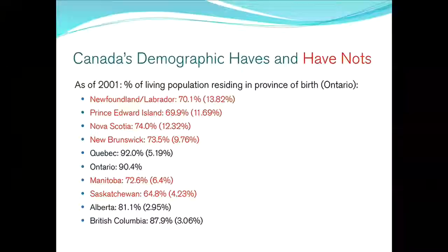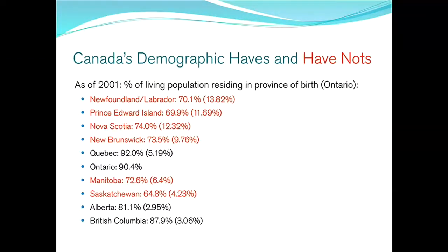I looked at 2001 census data — 2001 is the most recent year for which we can get accurate data about province of birth — and I looked at the proportion of the population that lives in the province in which they were born. For Newfoundland and Labrador, that number, 70.1%, says that only 70% of all people born in Newfoundland currently live in Newfoundland as of 2001. The number in brackets is the proportion of people born in Newfoundland that live in Ontario. I pick Ontario because it's at the top of the graph and also where I happen to be born. Look at some of these: 69.9%, 74%, 73.5% — this is, in a single snapshot of time, how many people currently live in their province of birth.